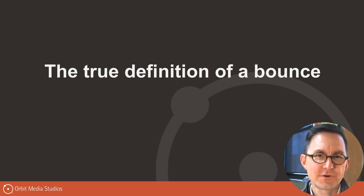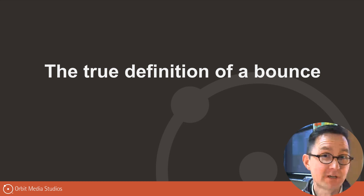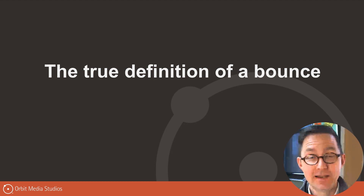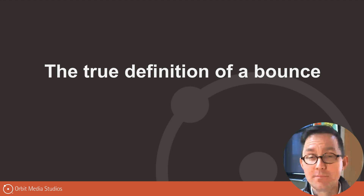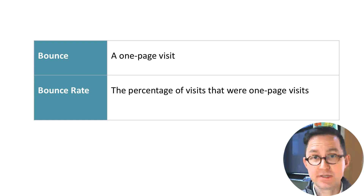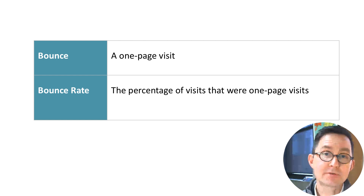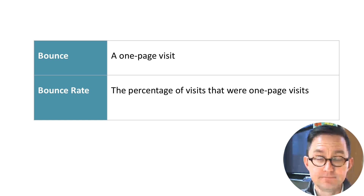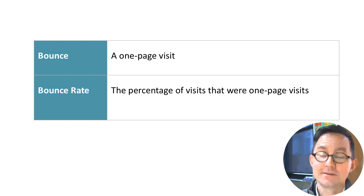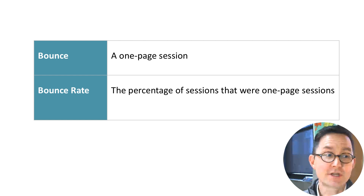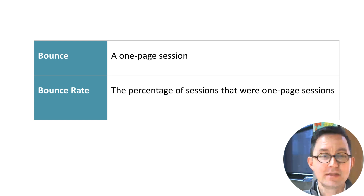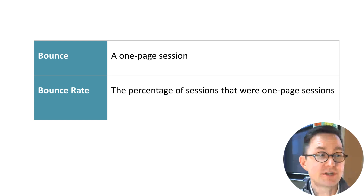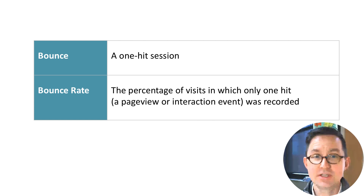This brings us to our third and final question: what really is a bounce — what's the true definition? We've been using the common definition of a bounce as a one-page visit: the person came, saw one page, they left. Might have had a long visit, might have had a short visit. That's the common definition, which makes the bounce rate the percentage of visits that were only one page. But if we use the lingo of analytics, a bounce is a one-page session — they call visits 'sessions' — and the bounce rate is the percentage of sessions that were one-page sessions. But in fact, the real definition of a bounce is something slightly different. It's not a one-page session — it's a one-hit session.